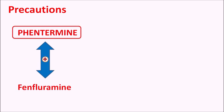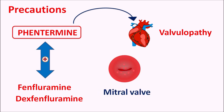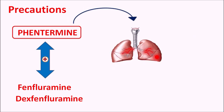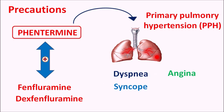When Phentermine is combined with drugs such as fenfluramine or dexfenfluramine (the dextro isomer of fenfluramine), it can increase the risk of valvulopathy — damaging the heart valves, particularly the mitral, aortic, and tricuspid walls — reducing pumping efficiency. This combination should be used carefully in patients with pre-existing cardiovascular disorders. The combination can also affect the lungs by increasing blood pressure, resulting in primary pulmonary hypertension (PPH), producing symptoms such as dyspnea (difficulty breathing), syncope (fainting), angina, and edema.